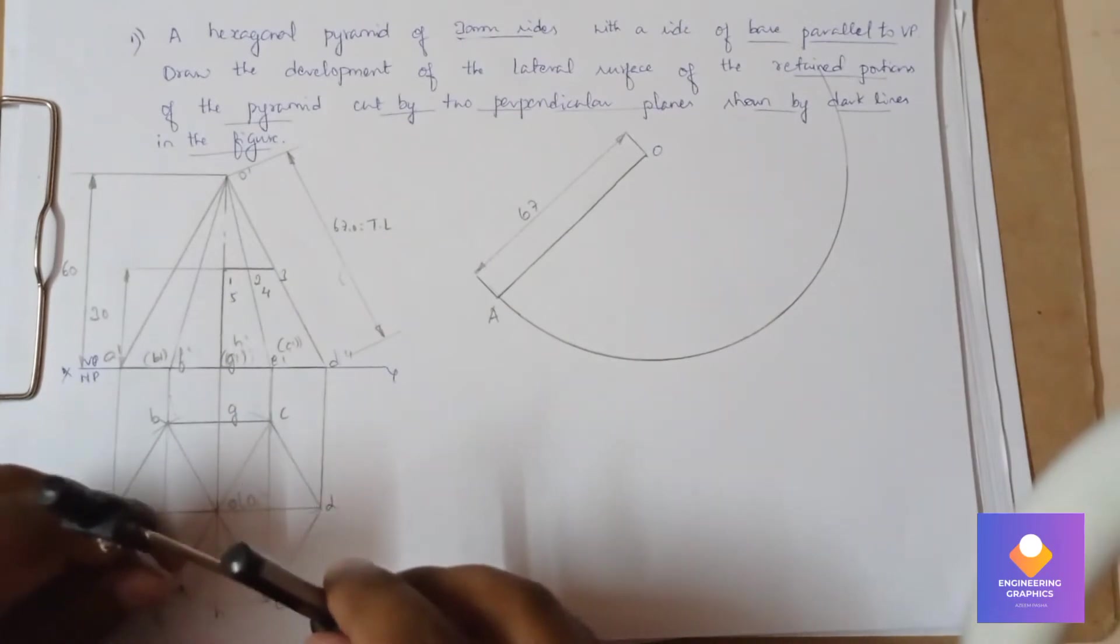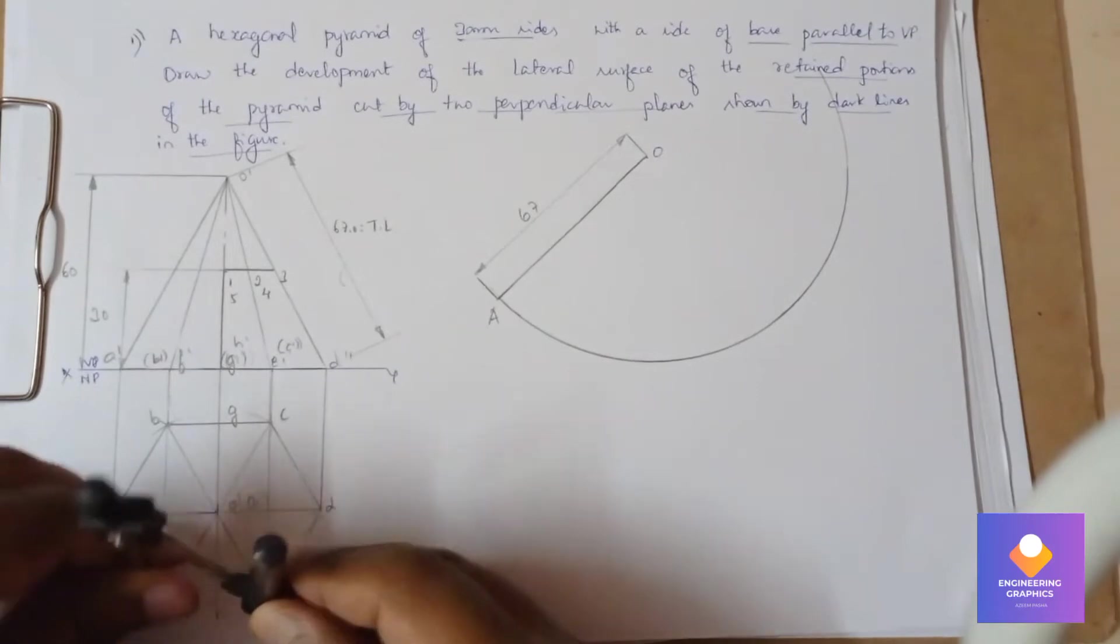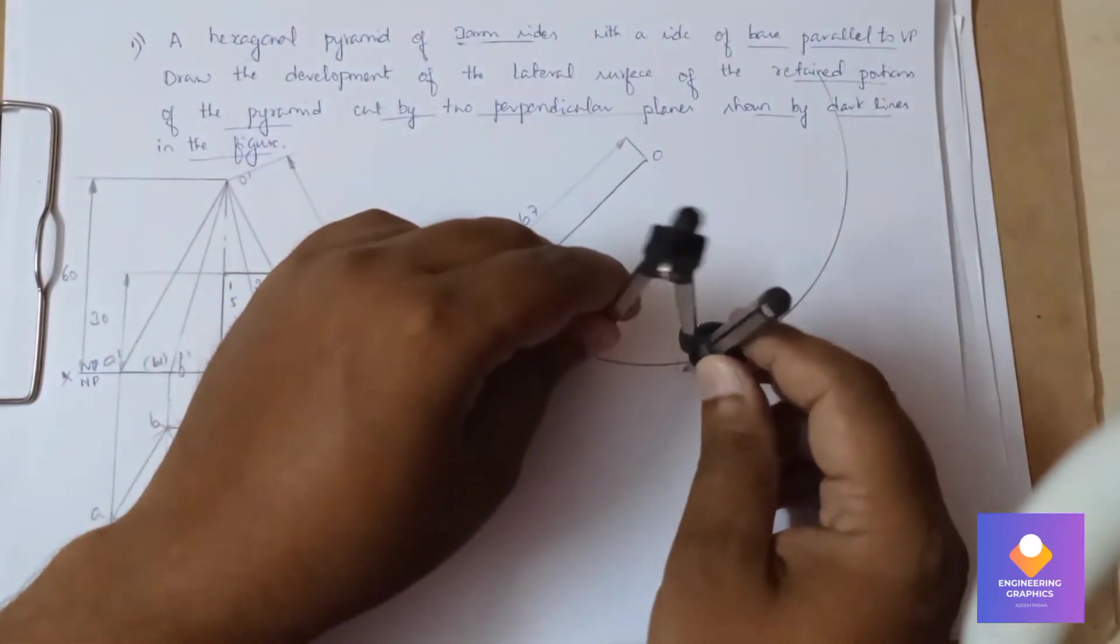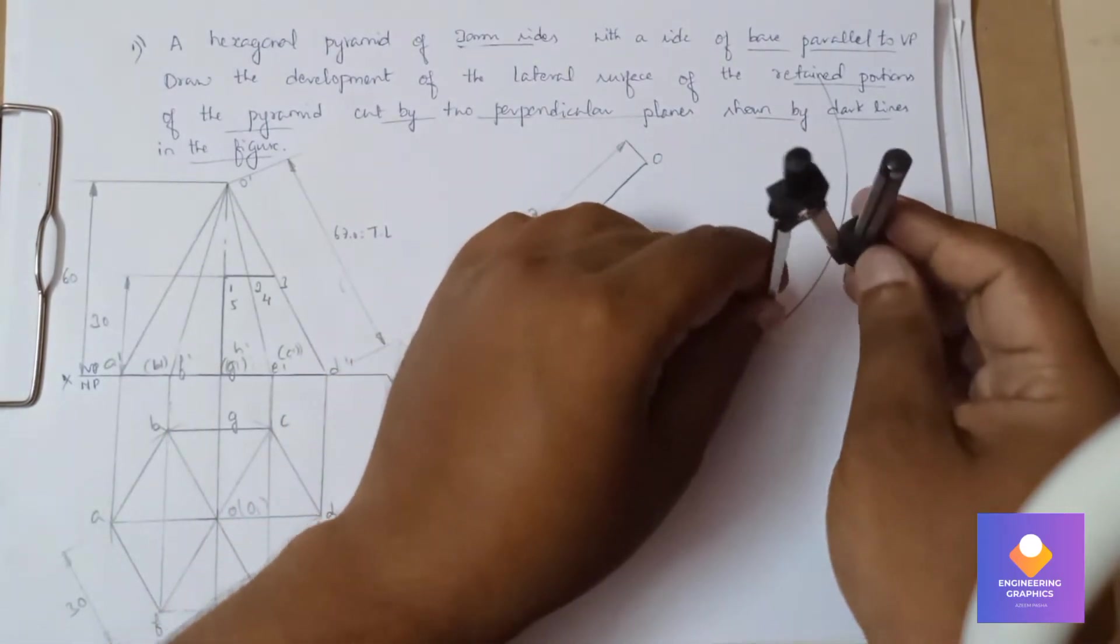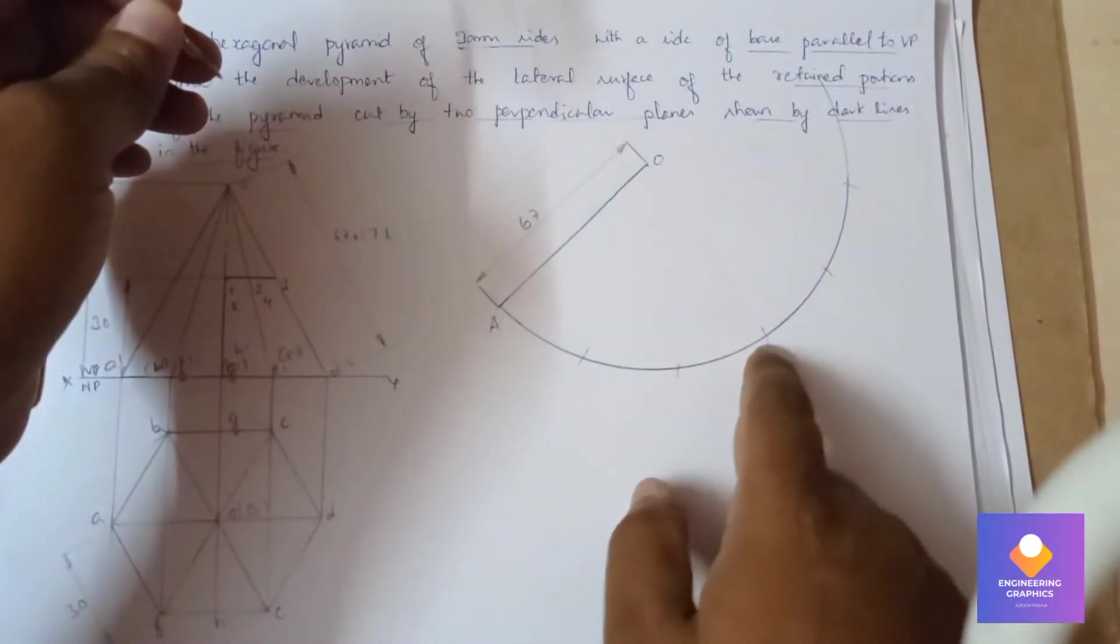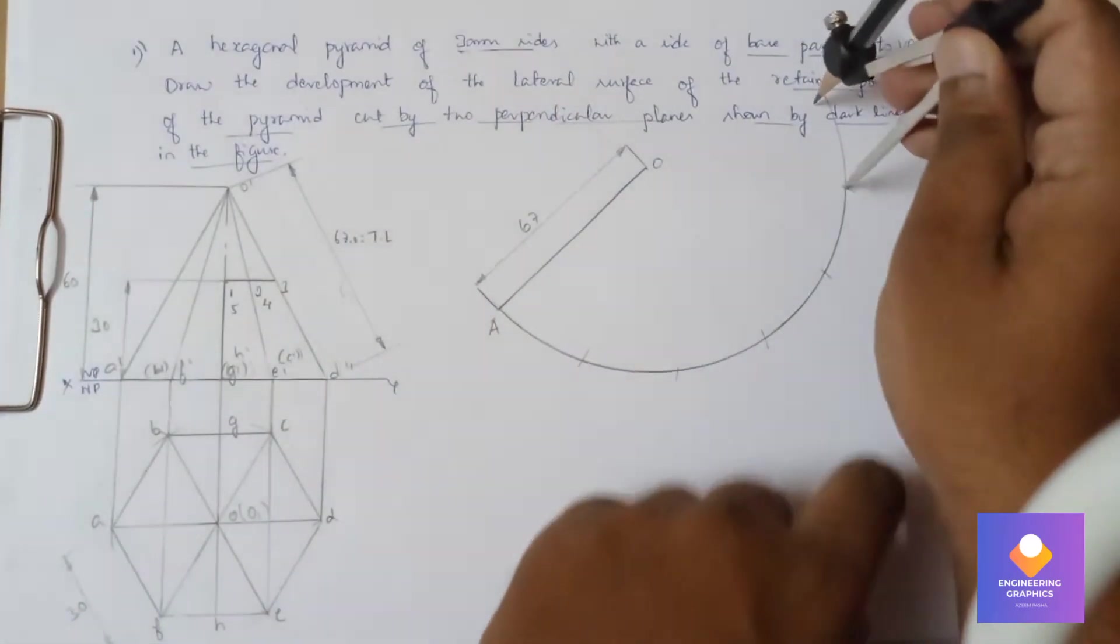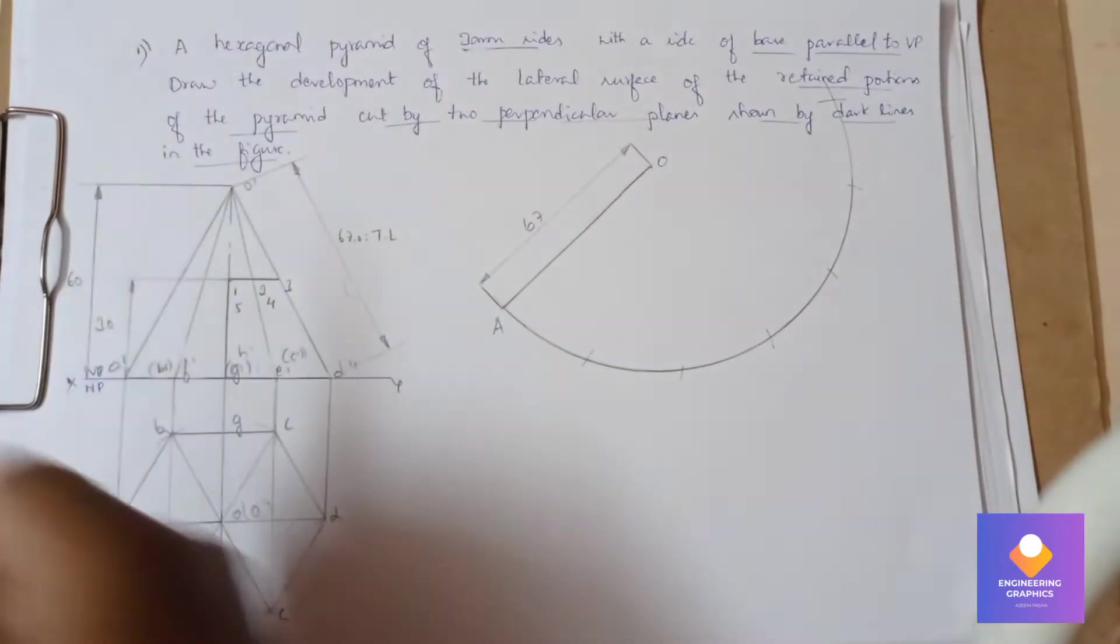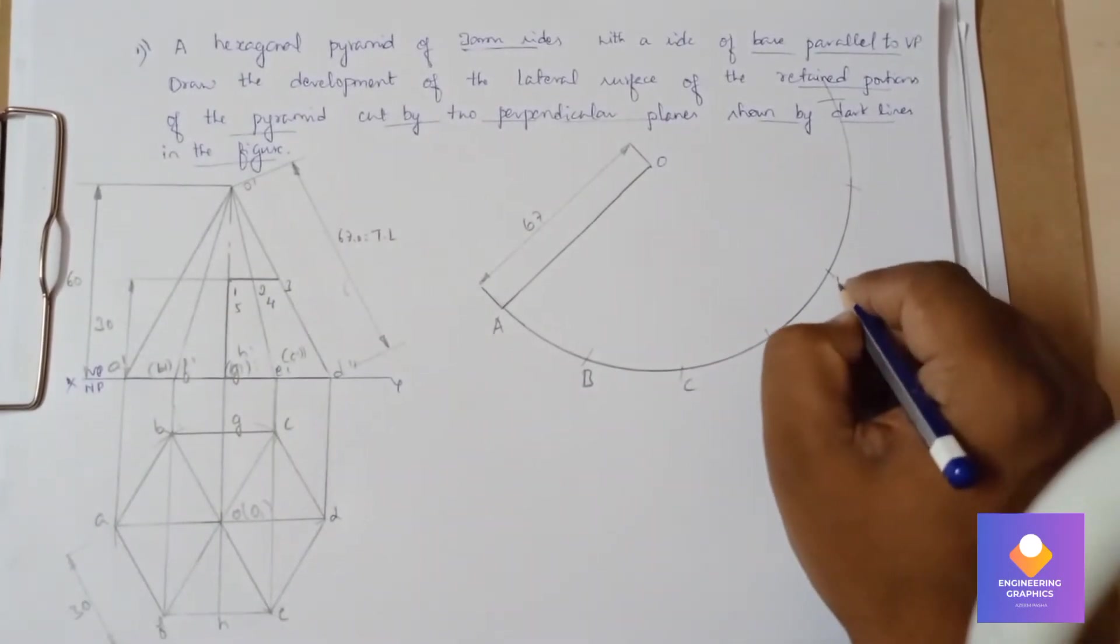Now measure the dimension of 30mm from the hexagonal lamina. 30mm, you can cut arcs. Total 6 arcs you can cut because it is a hexagon. We will form a hexagonal lamina, and you can set aside the hexagonal lamina.